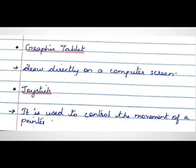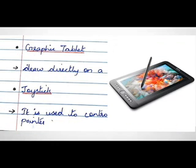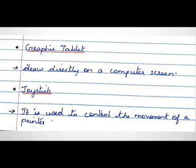Next one is the graphic tablet. It allows you to directly draw on a computer screen. It consists of a flat surface upon which we can draw with an attached stylus, which looks like a pen. Next input device is the joystick.